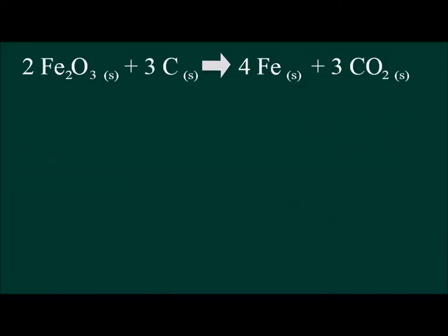We can see from our balanced chemical reaction equation that two molecules of hematite react with three molecules of carbon to produce four molecules of solid iron and three molecules of carbon dioxide gas.